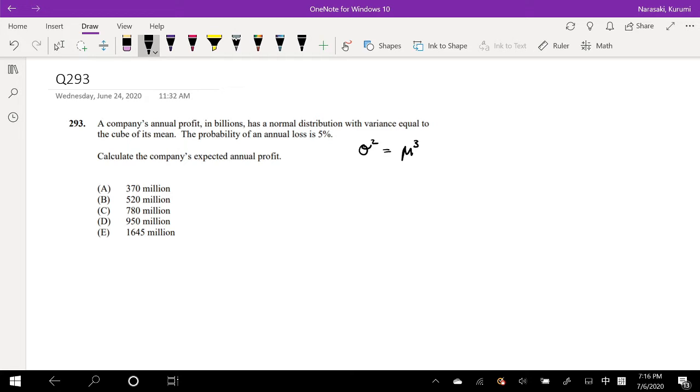So calculate the company's expected annual profit. The probability of annual loss—annual loss means profit is negative—so they're basically saying the probability of X being less than 0 is equal to 0.05.